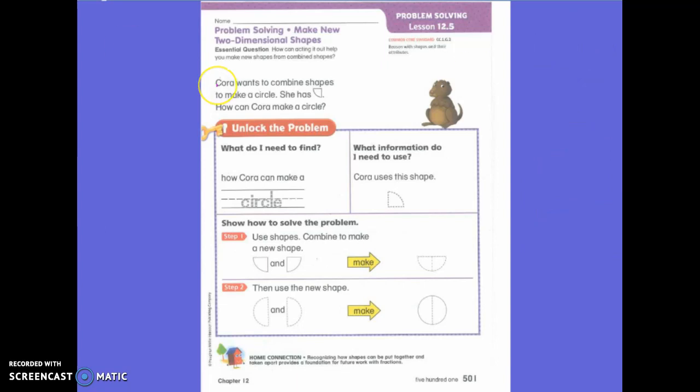Let's read the directions to see what it wants. Cora wants to combine shapes to make a circle. How can Cora make a circle? That's important information to know. She wants to make a circle, but all she has is this.